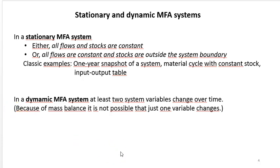In a dynamic MFA system, at least two system variables need to change over time. If one only changes, there's also at least one other that needs to change because of the mass balance. In this lecture we only deal with stationary MFA systems where all flows and stocks are constant.